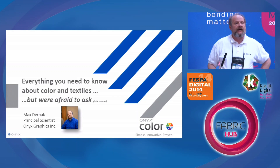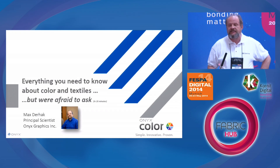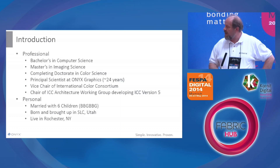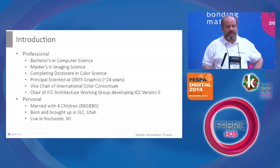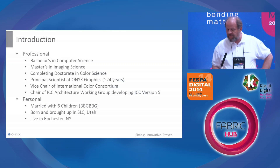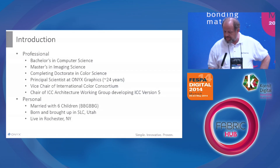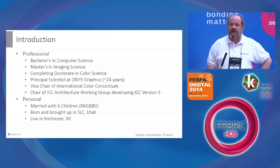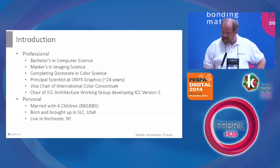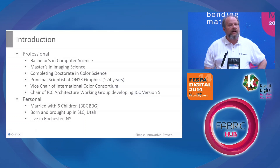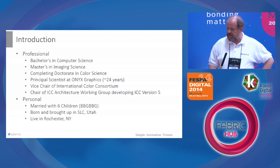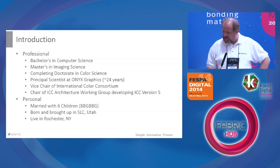My name is Max Derhack. I'm a principal scientist at Onyx Graphics. I'll give you a little bit of an introduction to myself. I have a bachelor's in computer science, a master's in imaging science at Rochester Institute of Technology, and at present I'm working on a doctorate in color science with Rochester Institute of Technology as well.